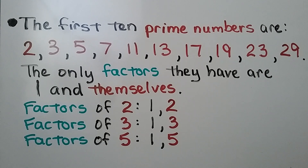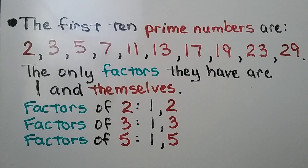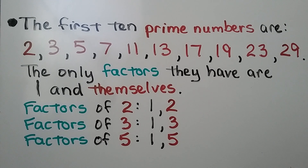The first 10 prime numbers are 2, 3, 5, 7, 11, 13, 17, 19, 23, and 29. The only factors they have are 1 and themselves.